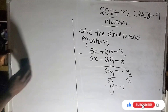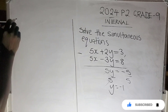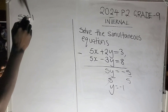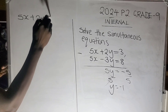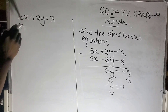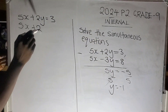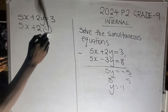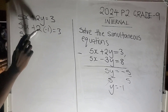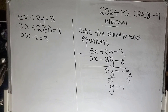Having found the value of y, let's find the value of x. You can use either of the two equations and find the same answer. Let's use the first one: 5x plus 2y equals 3. We are finding x now, and the value of y we found is negative 1.